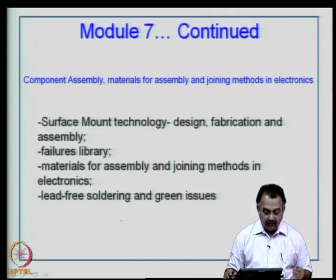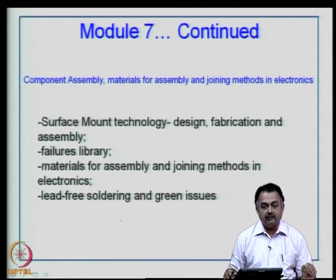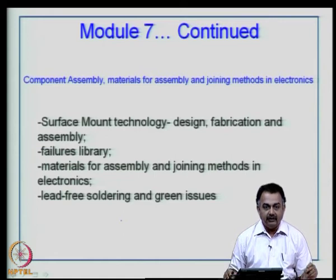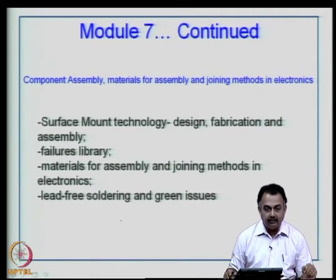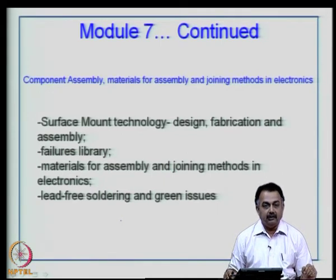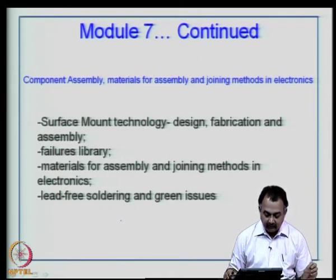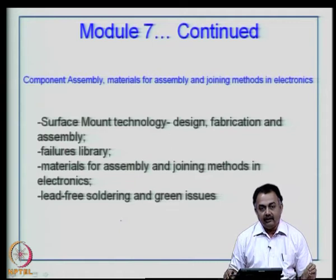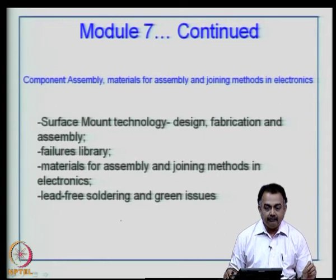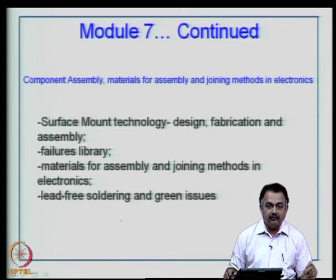To recap, we are discussing surface mount technology: design, fabrication, and assembly issues. We will also look at a failures library — studying what kinds of failures can be expected if your process design is faulty. We will look at materials for assembly and joining methods, briefly cover lead-free soldering and the thermal profile issues associated with it, and then environmental issues like replacement materials for lead.